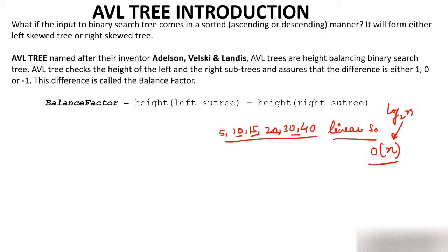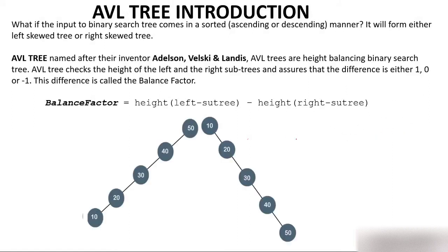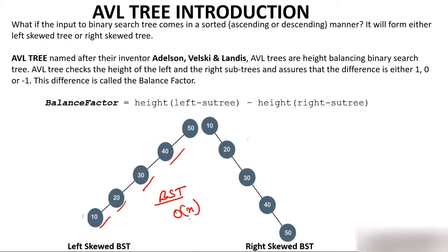When elements are coming in ascending or descending order, this creates a skewed tree. If elements are inserted in descending order — 50, 40, 30, 20, 10 — this is called a left skewed tree. If inserted in ascending order, you get a right skewed tree. Both are valid BSTs, but their complexity is now O(n) because to search an element you have to check every element. To solve this problem, three individuals came up with a solution.